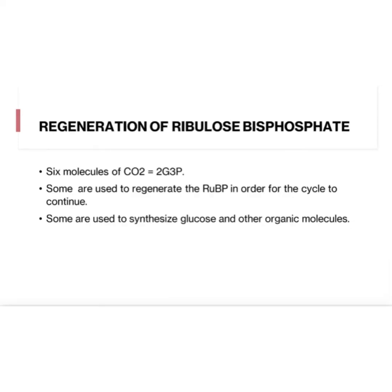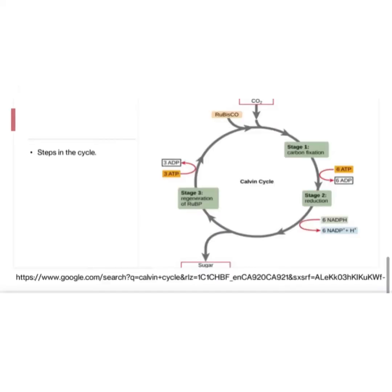Lastly, we have regeneration of ribulose bisphosphate. Each turn of the Calvin cycle fixes one carbon, and the actual sugar product is not glucose but the three-carbon sugar, which can later combine to form glucose. For the net synthesis of the phosphoglyceraldehyde molecule, the cycle must turn three times, fixing three molecules of carbon dioxide. To make one glucose molecule requires six turns and fixation of six carbon dioxide molecules.